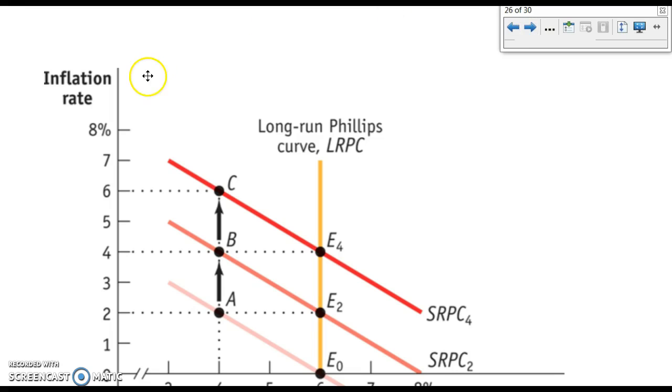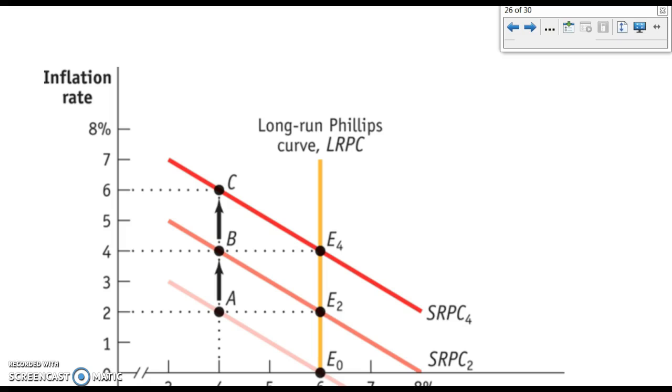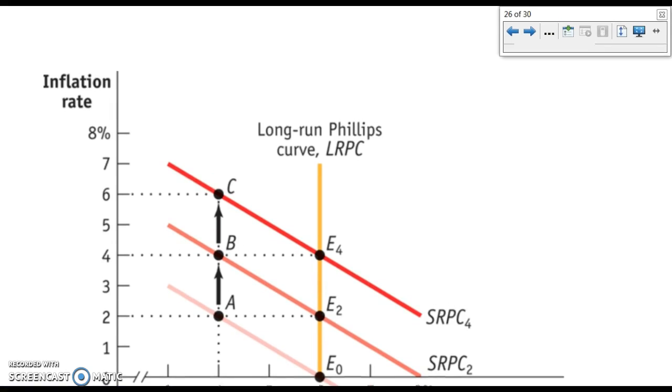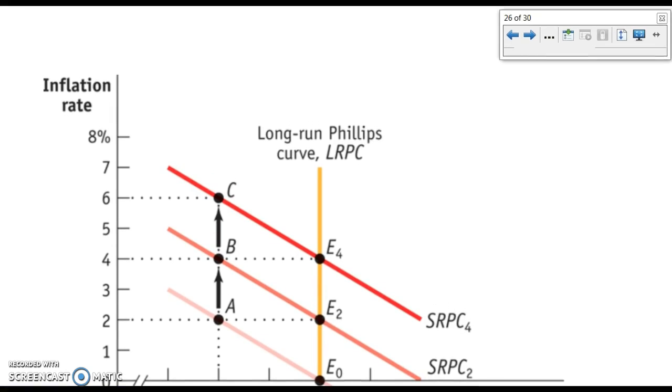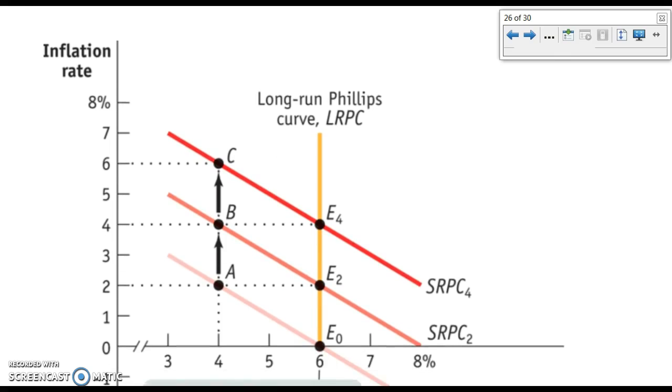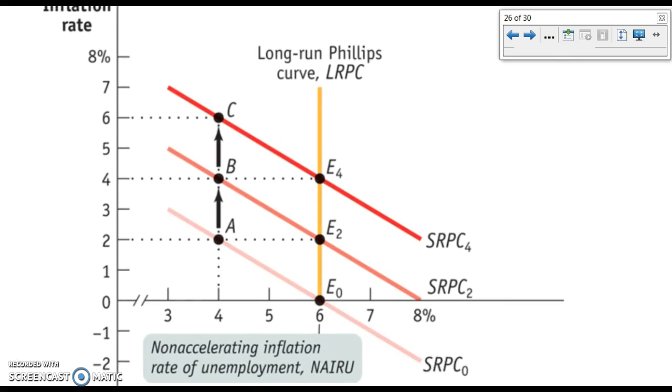Okay, so this one shows us the long-run Phillips curve, which is actually, to remember what it looks like is relatively easy because it's another one of our vertical lines. It's a vertical line, and it's vertical at the natural rate of unemployment. And it labels it here as the non-accelerating inflation rate of unemployment. I wouldn't concern yourself with that. Just assume it's the same as the NRU. You don't have to use a separate term. That's the NRU. So let's say the natural rate of unemployment is about 6%. The long-run Phillips curve is going to be vertical at 6%.